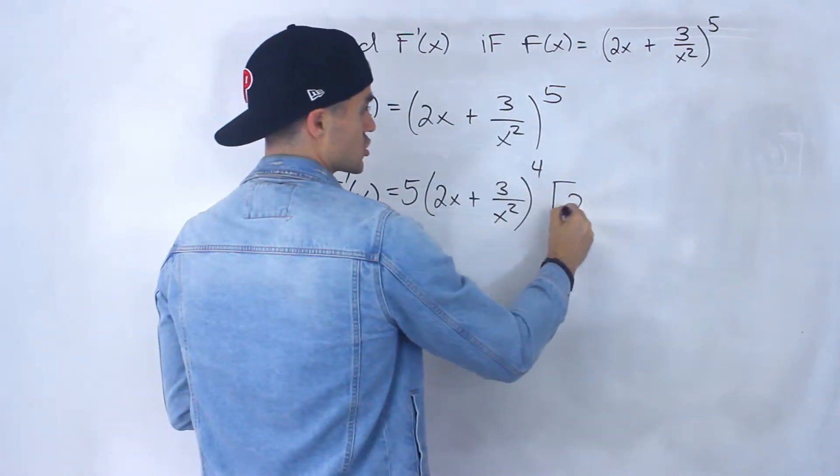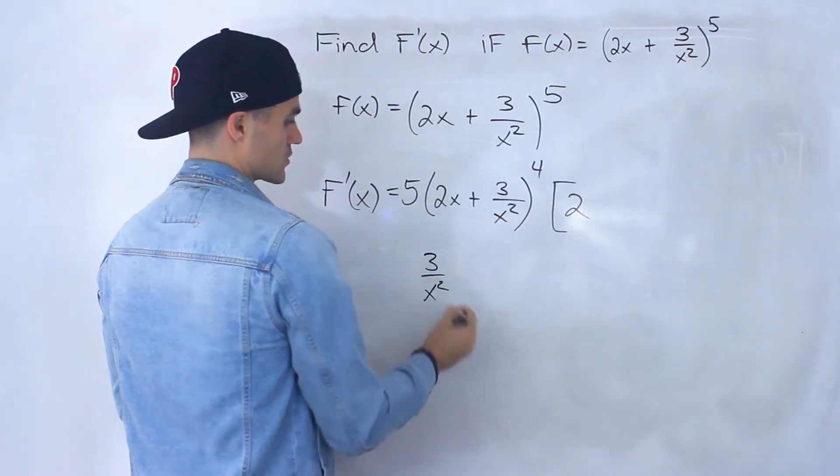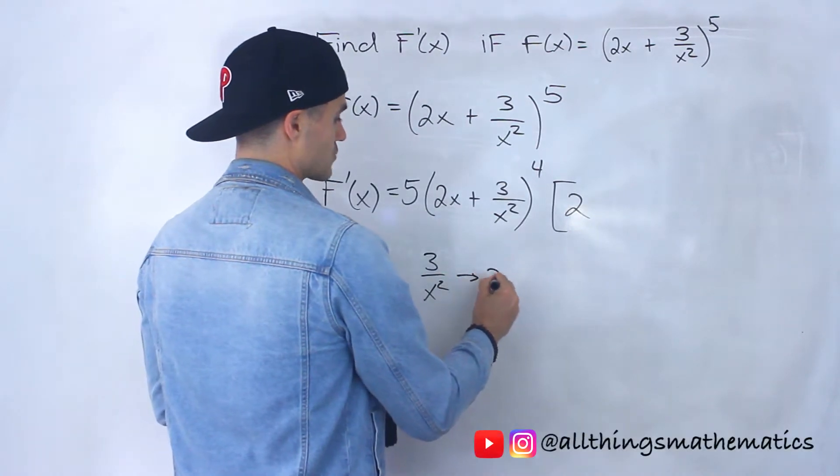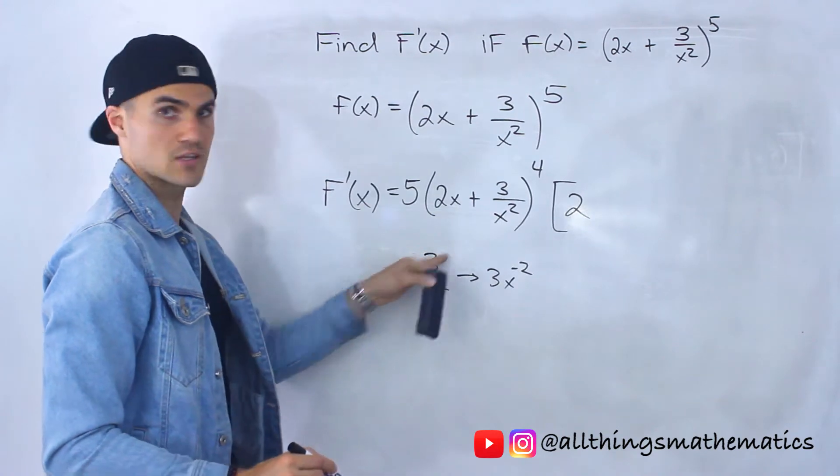So the derivative of 2x is just 2. And then what's the derivative of 3 over x squared? Well, 3 over x squared we can rewrite as 3x to the negative 2 if we bring this exponent up to the numerator.